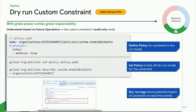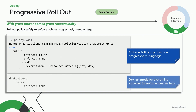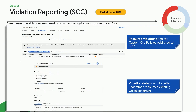Once Taylor has observed dry run behavior for some period of time and is confident that this new policy will not break workflows, they can progressively enforce this policy using tags. Selected tag nodes can be switched from dry run to production while leaving the rest of the resource hierarchy in dry run mode. Once this policy is enforced, it's in action.